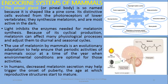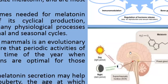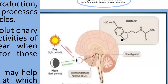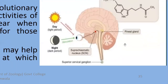Melatonin is produced during dark conditions — these cells are active during dark conditions. Melatonin is a tryptophan amino acid derivative hormone. During the light period, when a message is received from light through the suprachiasmatic nucleus, melatonin production is inhibited.